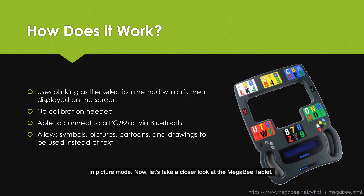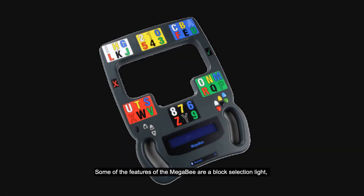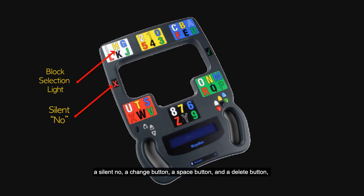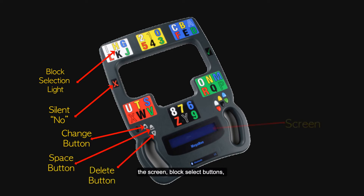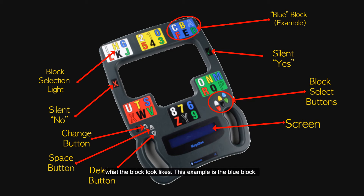Now let's take a closer look at the features of the Megabee tablet. Some of the features are a block selection light, a silent no, a change button, a space button, a delete button, the screen, block select buttons, and a silent yes. This is an example of what the block looks like — this is the blue block, which is what the student would look at to either choose the block or the color of the letter and then blink.